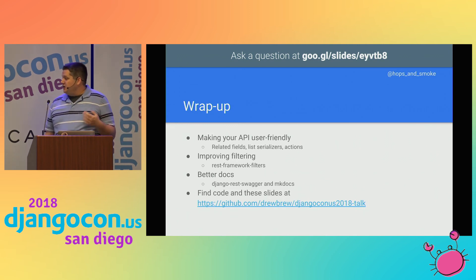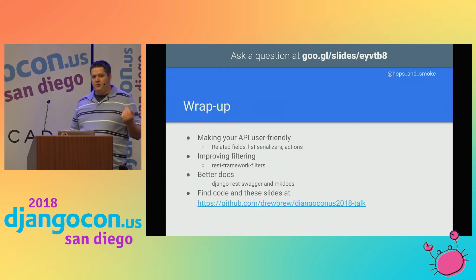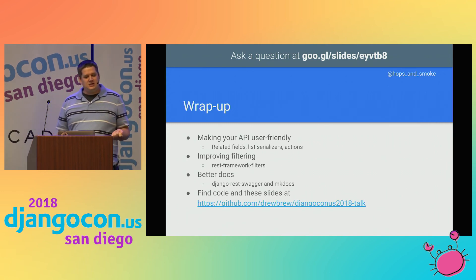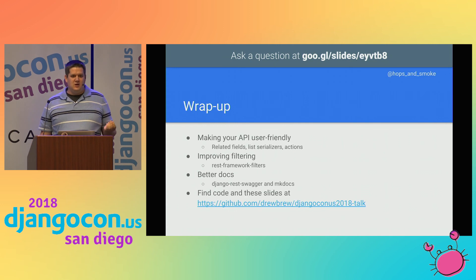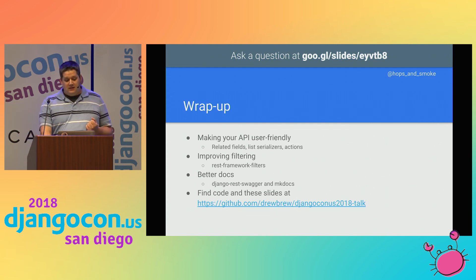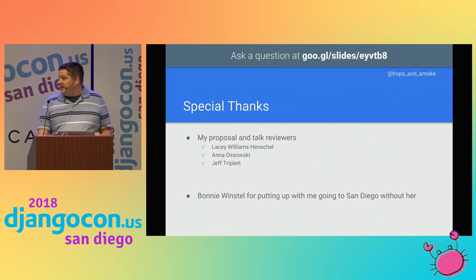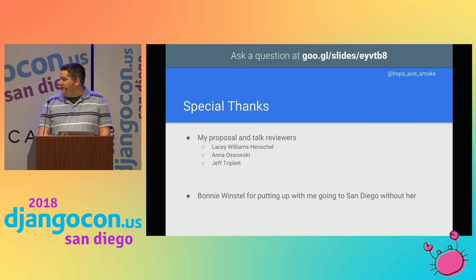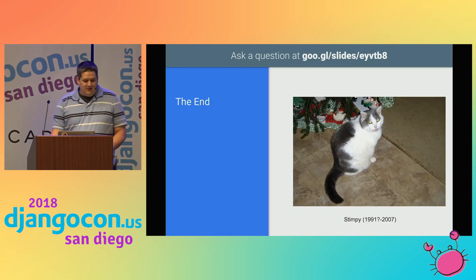To wrap up: I talked about making your API user-friendly with related fields, list and detail serializers, and actions. I also talked about improving filtering with REST framework filters, and then documentation. I've got example code up on GitHub — feel free to take a look — and the link to the slides is there as well. I'd like to give special thanks to Lacey, Anna, and Jeff for reviewing my talk and my proposal — this would not have gotten anywhere near this far without their help. And thank you to my wife Bonnie for putting up with me going to San Diego without her.